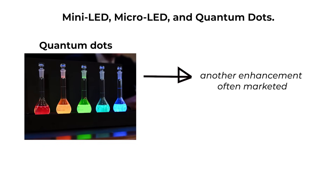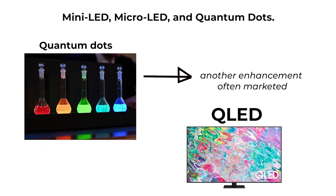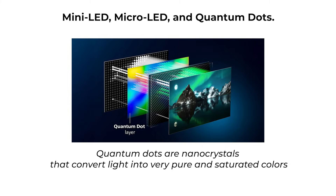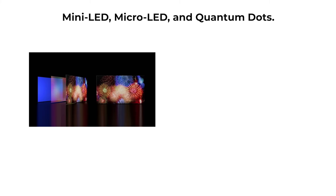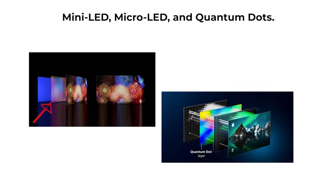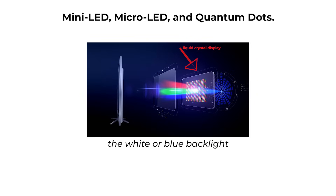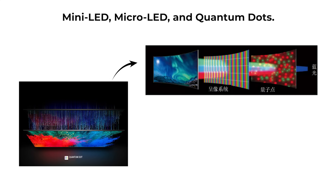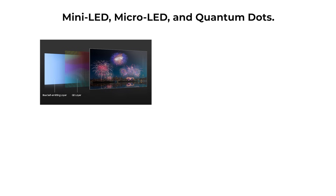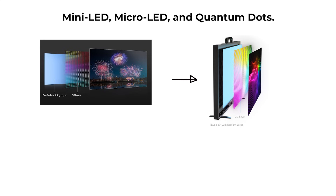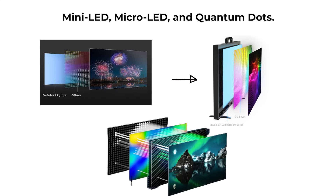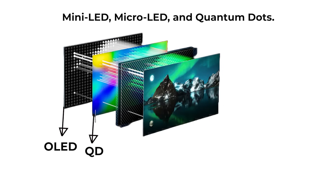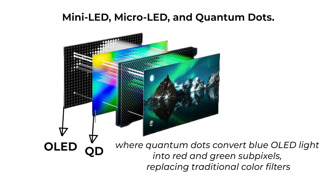Quantum dots are another enhancement often marketed under the name QLED. Quantum dots are nanocrystals that convert light into very pure and saturated colors. They are typically placed as a layer in front of an LED backlight. In a liquid crystal display, the white or blue backlight passes through the quantum dot layer, which shifts parts of the spectrum into precise reds and greens. This improves color accuracy, widens the color gamut, and boosts brightness. Quantum dots are not a panel type themselves — they are a color conversion layer that works with existing liquid crystal display panels. A related use is in QDOLED, where quantum dots convert blue OLED light into red and green sub-pixels, replacing traditional color filters.